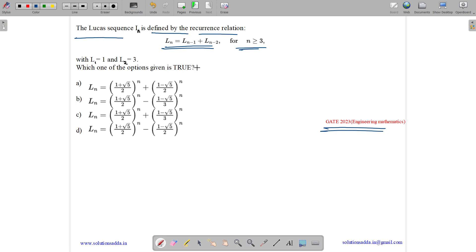Which one of the following options given is true? So these are the options. You can do this question by these boundary conditions only. Always try to first satisfy the boundary conditions. So let us check for L of 1 equals to 1. Let us put n equals to 1.